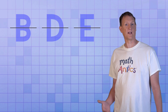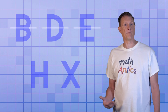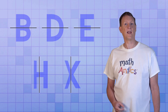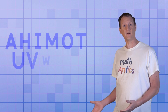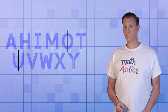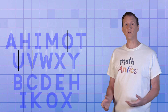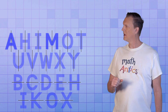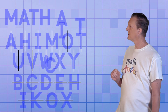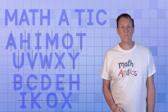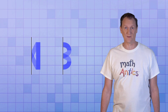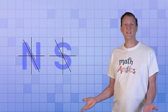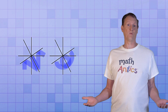The letter H and the letter X have both a vertical line of symmetry and a horizontal line of symmetry. Here are the letters that have a vertical line of symmetry, and here are the letters that have a horizontal line of symmetry. It almost spells 'Math Antics!' Too bad N and S don't have line symmetry — there isn't a line we could fold them along where their halves would match.